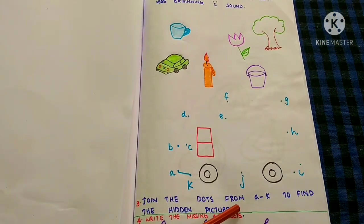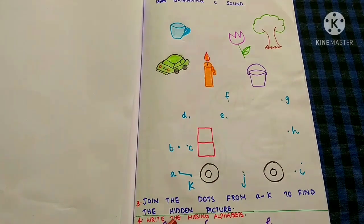Join the dots from A to K to find the hidden picture.